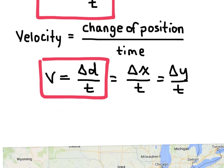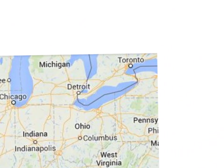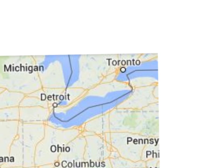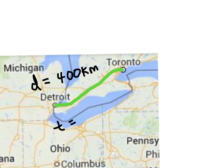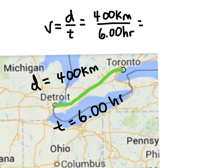Let's try using this equation. Say we're going to drive from Toronto down to Detroit — a total distance of about 400 kilometers — and it took you six hours to make the trip. What was your speed? Speed equals distance over time, so we have 400 kilometers over 6 hours, for a total speed of 66.7 kilometers per hour.